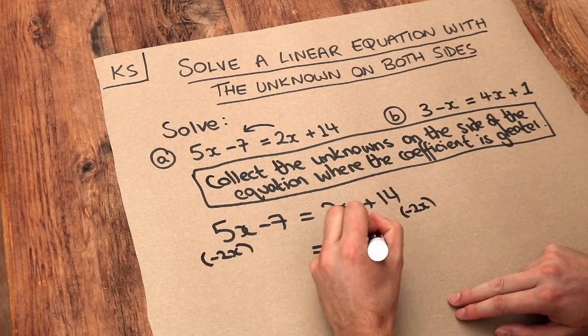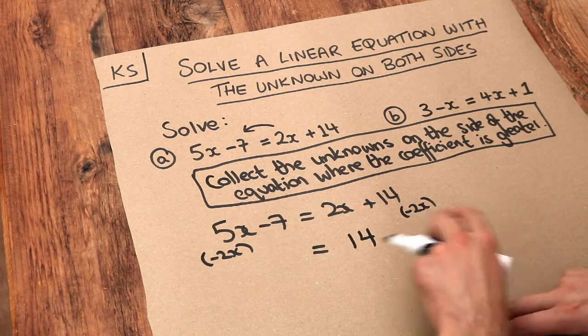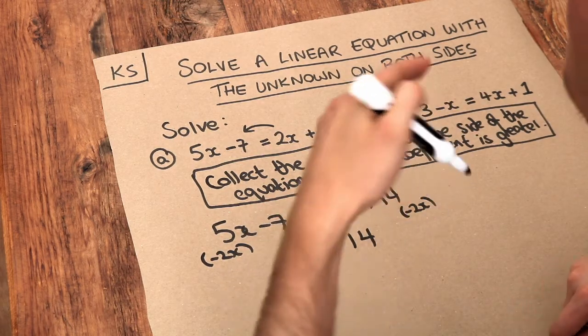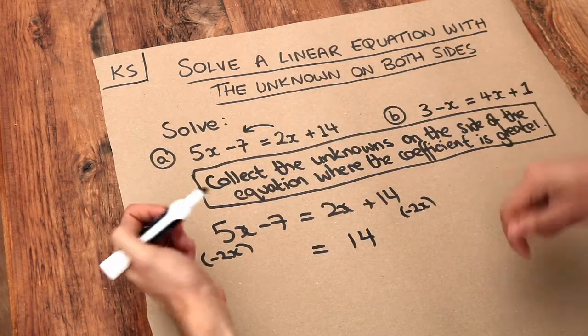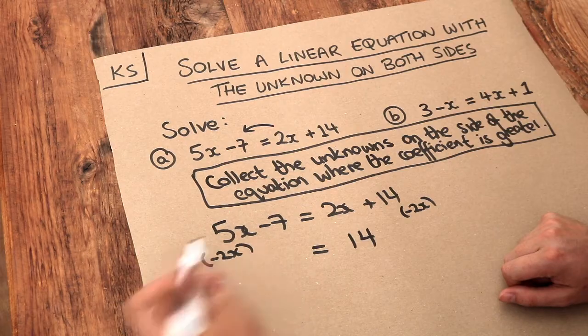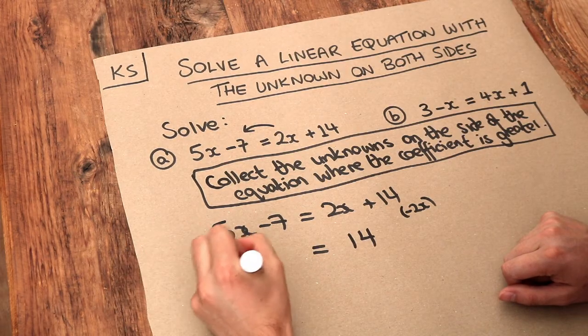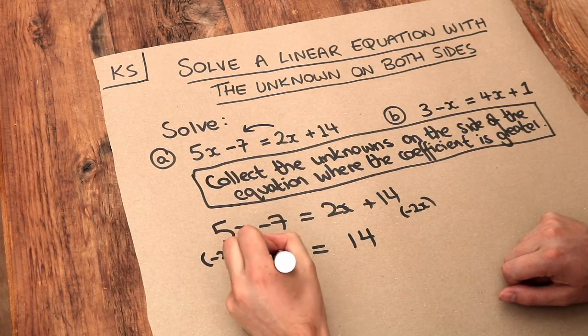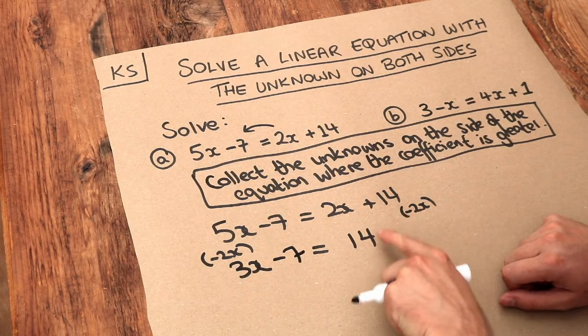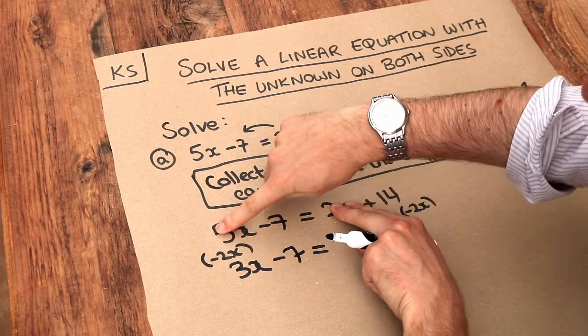So we're just left with 14 on the right-hand side. And we've also got to subtract 2X from the left-hand side because whatever we do to the left-hand side of the equation, we have to do the same to the right. 5X minus 2X is 3 lots of X. And we've still got that minus 7 there. So the only thing that's disappeared is this term here and that's gone down by 2X.